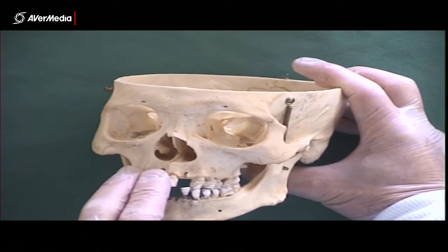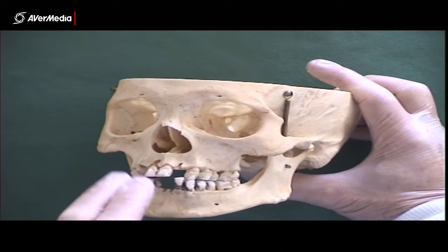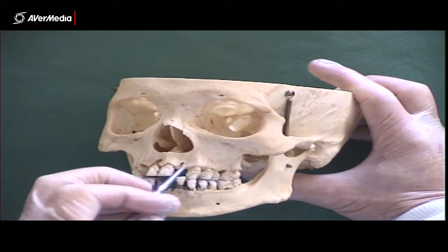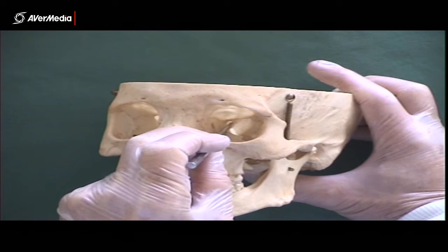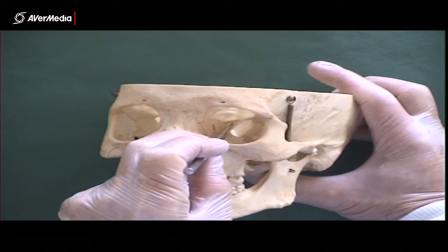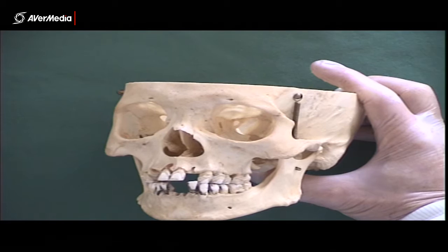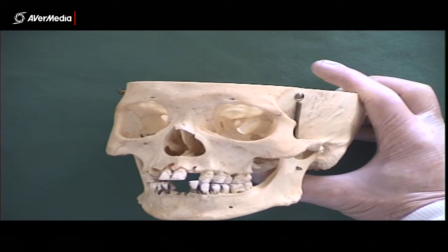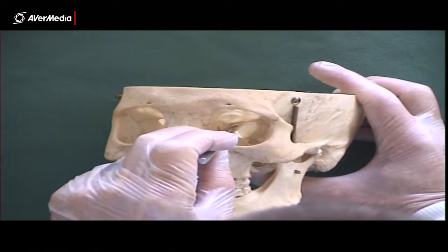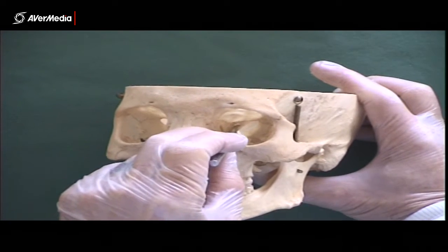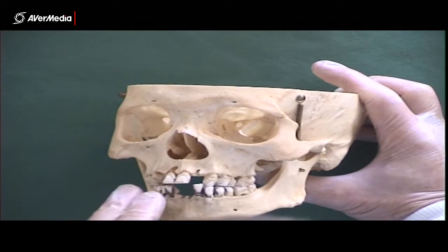If we just change the angle slightly, we can see next to the superior orbital fissure this little opening here — that is the optic canal. Just medial to the superior orbital fissure is the optic canal.